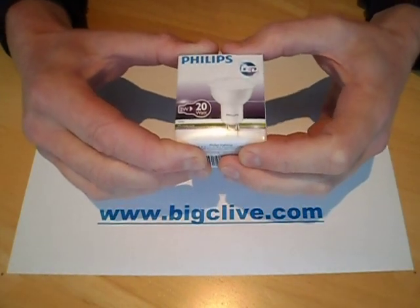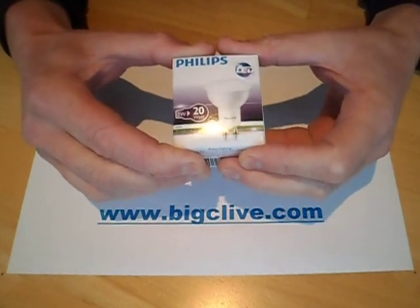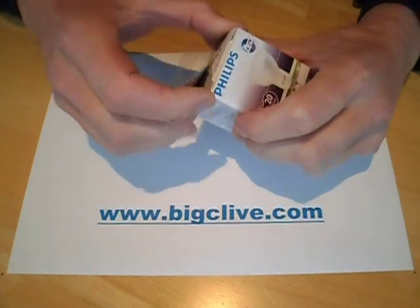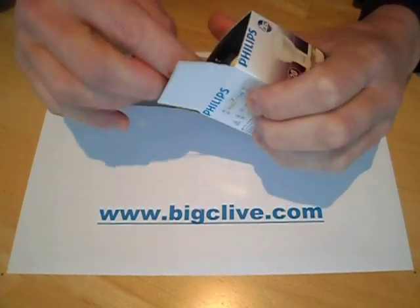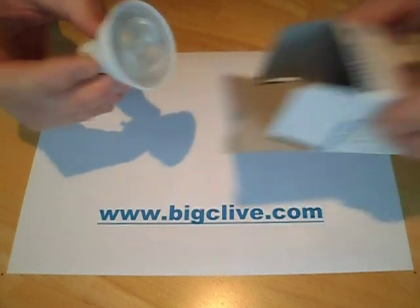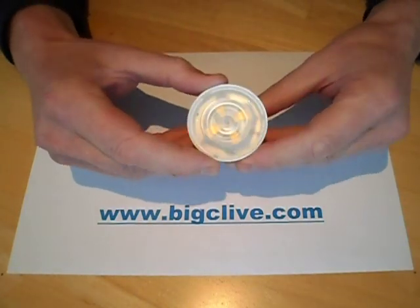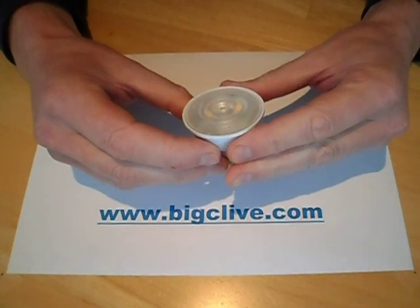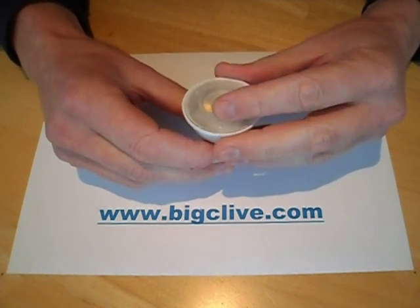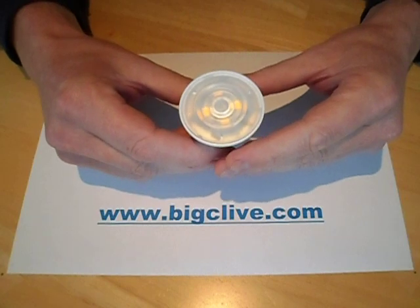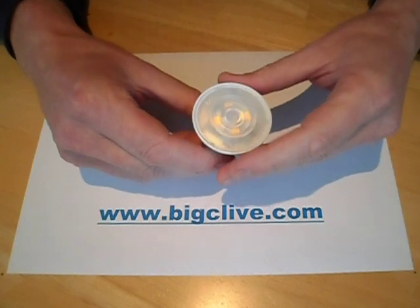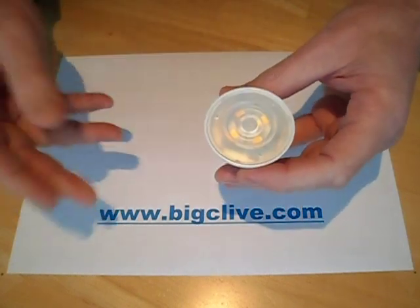A Philips GU10 240 volt 2 watt LED lamp. Now, the reason I bought this, it was quite expensive compared to typical Chinese lamps, but the reason I bought this was because Philips normally would make quite nice lamps, and I wanted to see basically what the circuitry was inside and how it compared to the Chinese style GU10 equivalent fixtures.